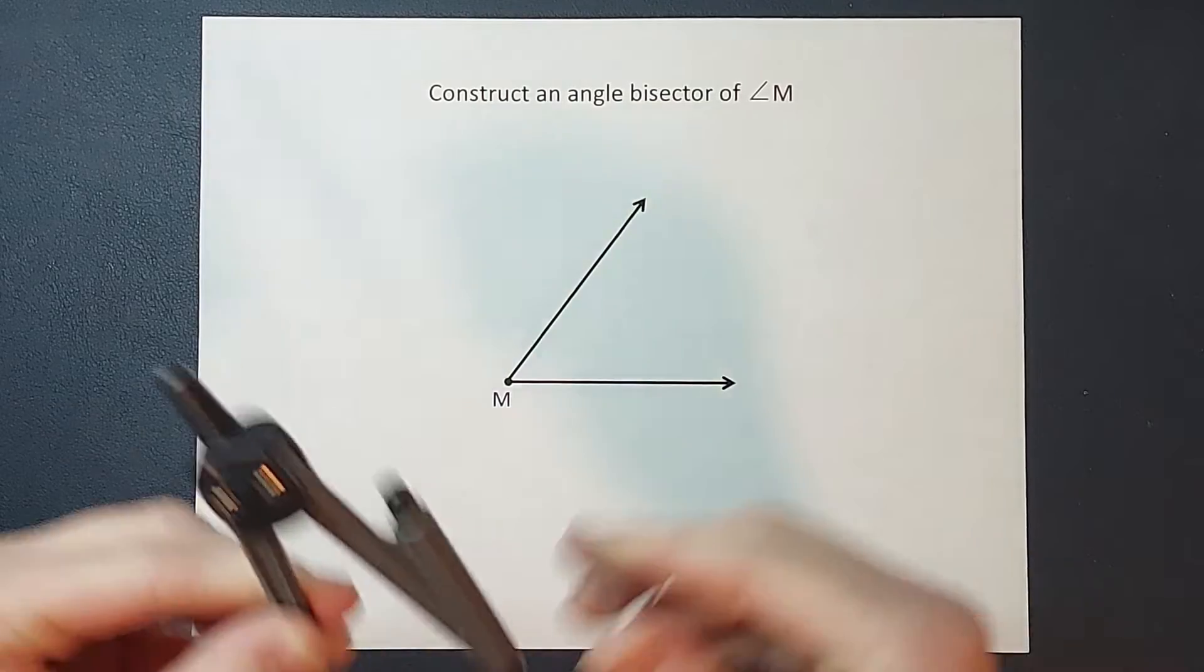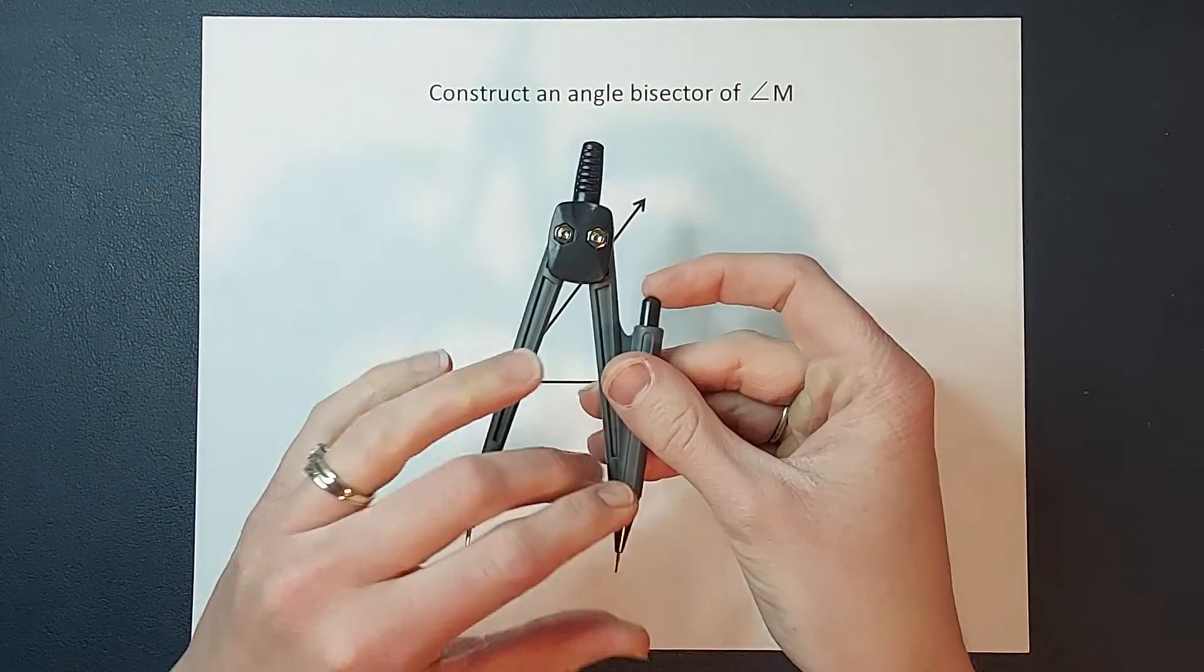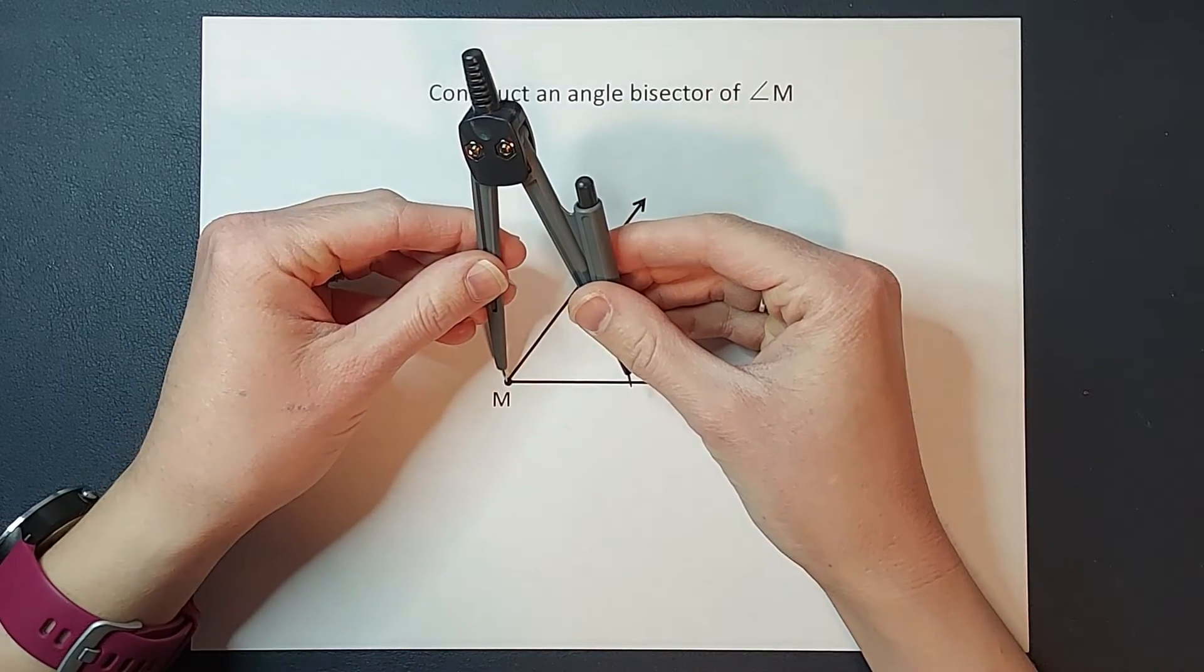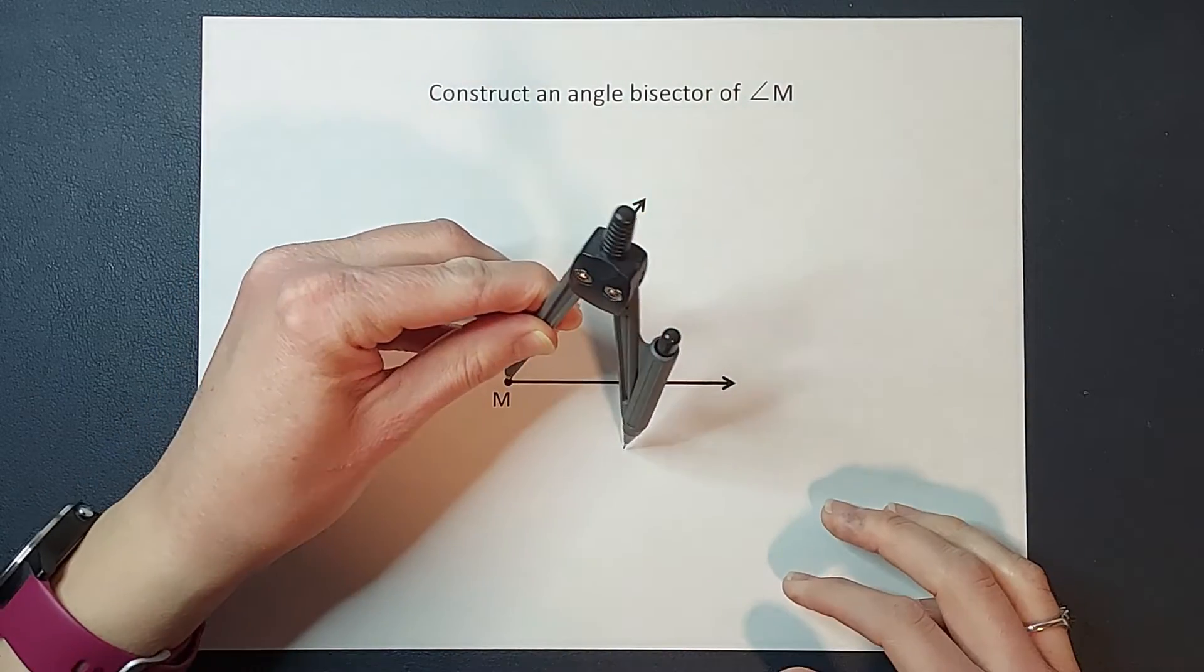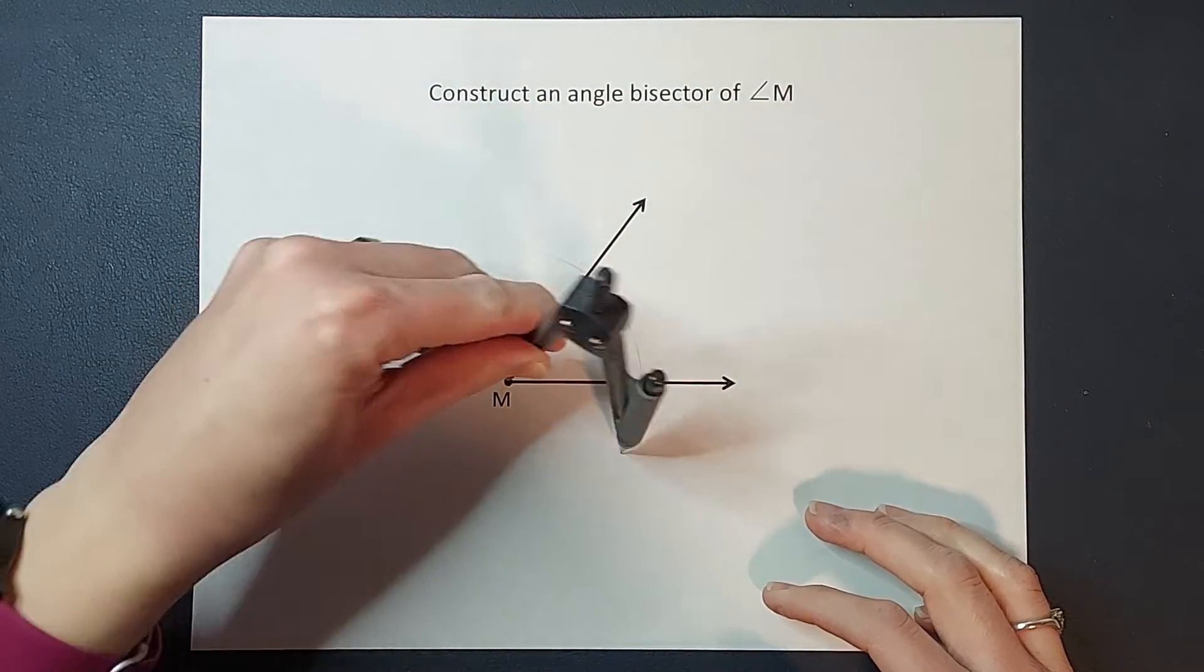So what we're going to do is set our compass to basically any length here, set it on our point, and make an arc. Pretty easy so far, right?